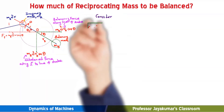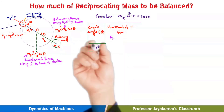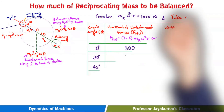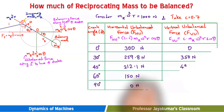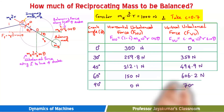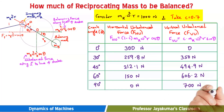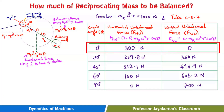Finally, let us understand how much of the reciprocating mass should be balanced — what should the ideal value of the fraction c be. Consider this numerical illustration: let mr·ω²r = 1000 N and take c = 0.7. For these values, if we determine the horizontal and vertical unbalanced force values using the derived expressions for various crank angles, we get the following table.